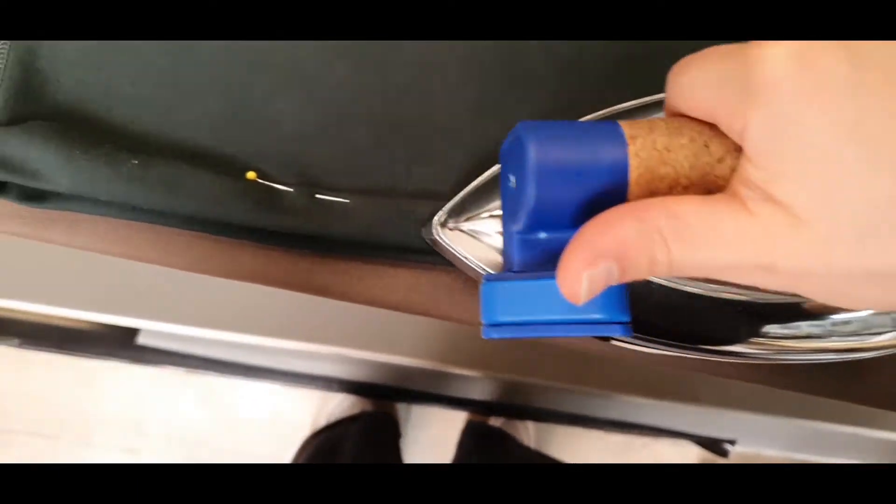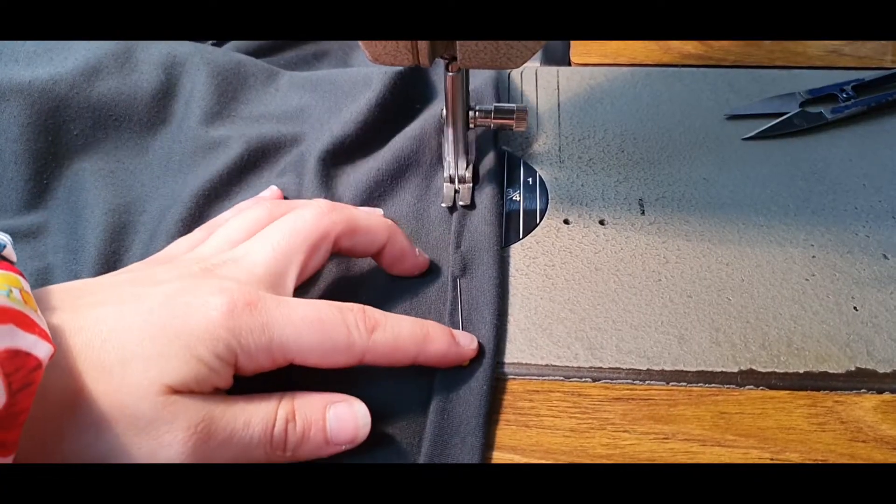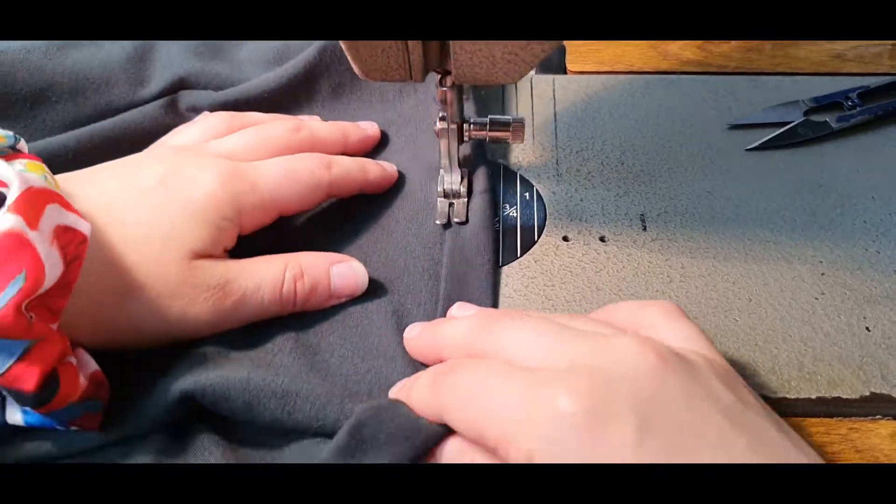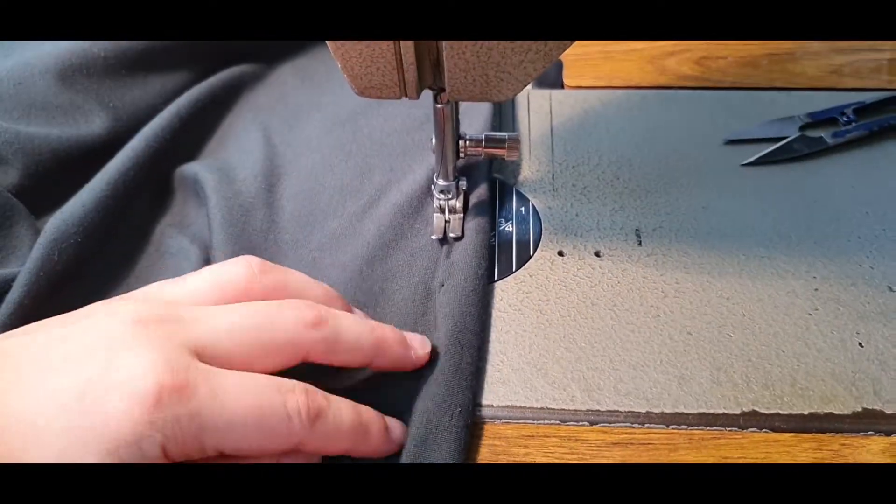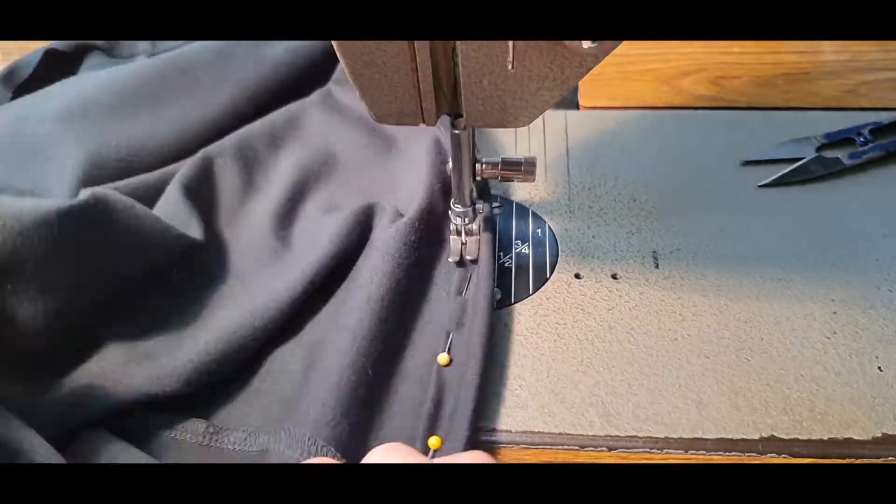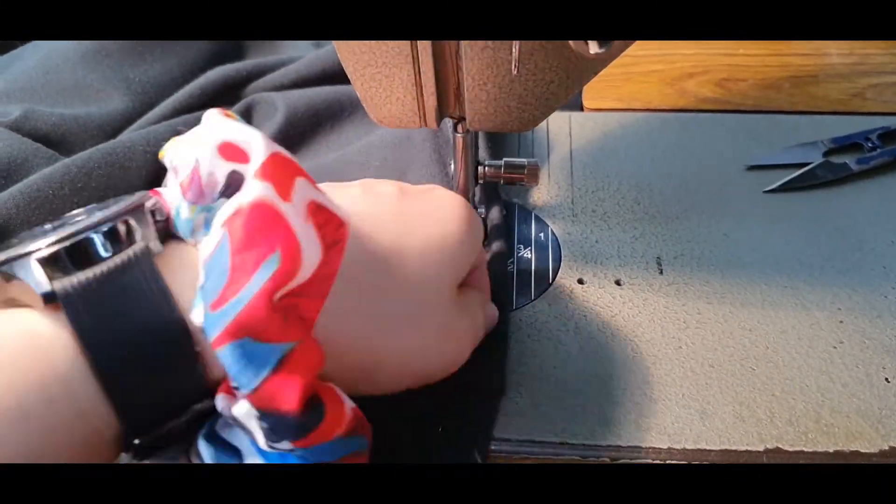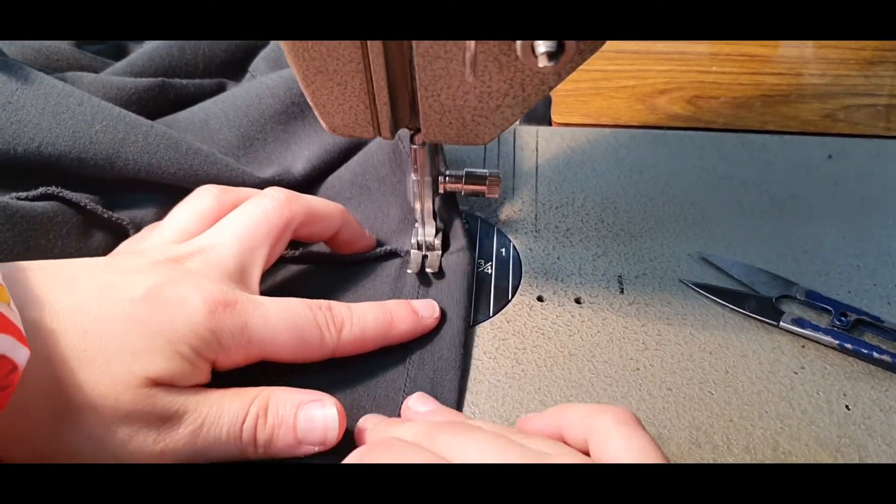Then on a machine, I straight sew as close to the edge as possible. When you come back around, just sew over where you started so it won't unravel.